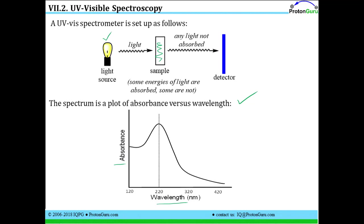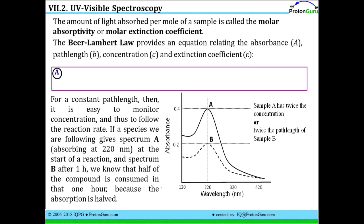If we consider a particular spectrum, we see a maximum absorbance at 220 nanometers. The amount of light absorbed per mole of sample is called the molar absorptivity or the molar extinction coefficient, given the symbol epsilon. The Beer-Lambert law relates the absorbance seen in your spectrum to the path length — that is, how wide a path your light has gone through your sample — the concentration of your sample, and how much light is absorbed per mole of your material. So the Beer-Lambert law is: absorbance equals extinction coefficient times path length times concentration.